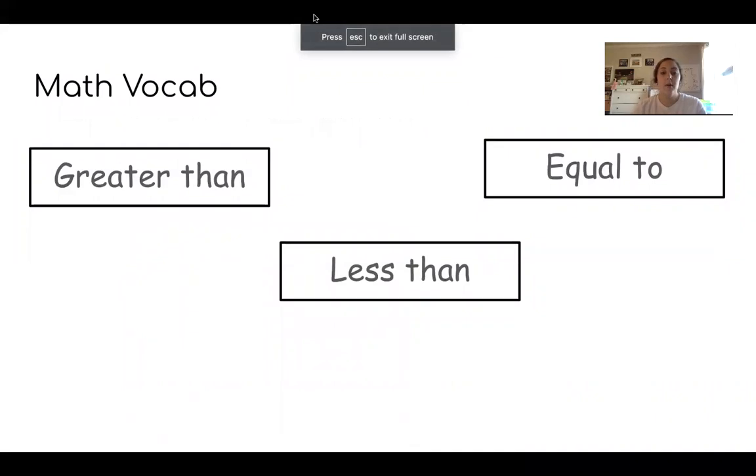So today Ms. Winkler said that we were going to do greater than, less than, and equal to. Let's talk about what these words mean. Greater than means bigger. Everyone say bigger! Less than means smaller. Everyone say smaller. And equal to means the same. Everyone say they are the same. Good. Greater than, bigger, less than, smaller, equal to, the same.